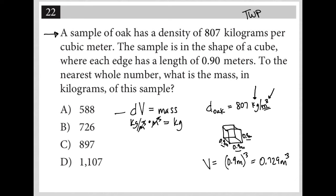I have 0.729 meters cubed times 807 kilograms per meter cubed. Meters cubed crosses out. I go to my calculator and multiply 0.729 times 807 equals 588.303 kilograms.